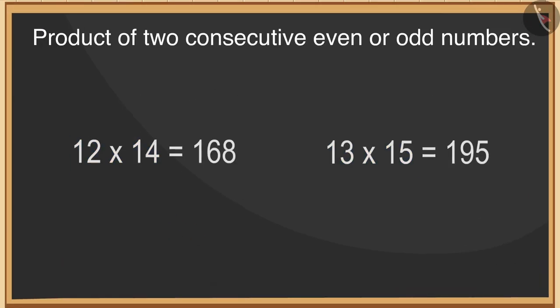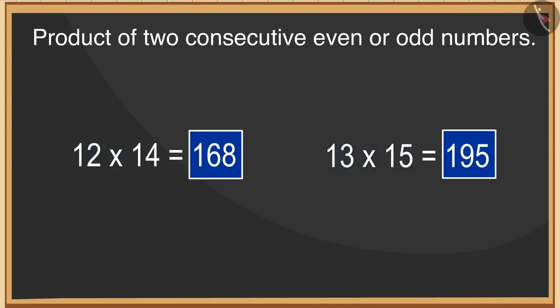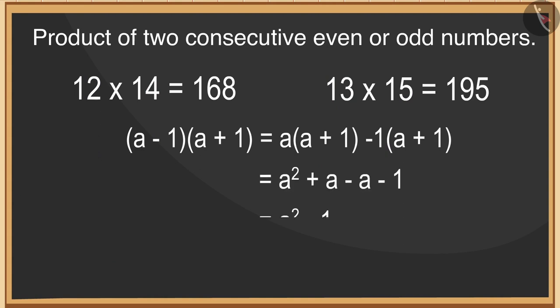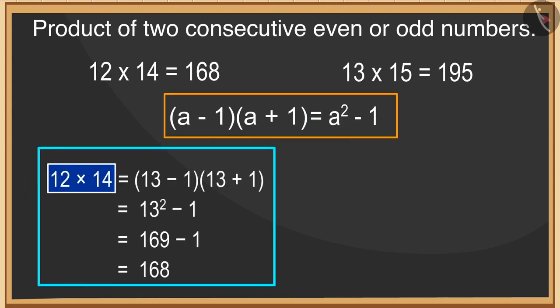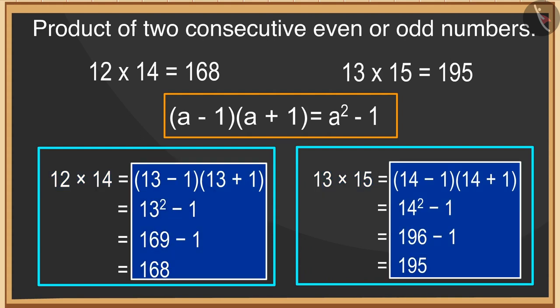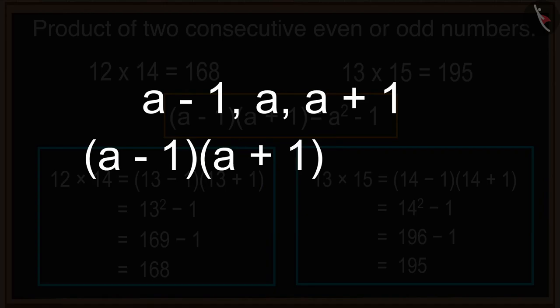Look at the product of these numbers — can you find the product without multiplying the two numbers? We can write the product of two consecutive even or odd natural numbers in this way. Thus we can express the product of 12 and 14, and 13 and 15, in this way. Therefore, we can find the product of two consecutive even or odd natural numbers by subtracting one from the square of the number that lies between them.